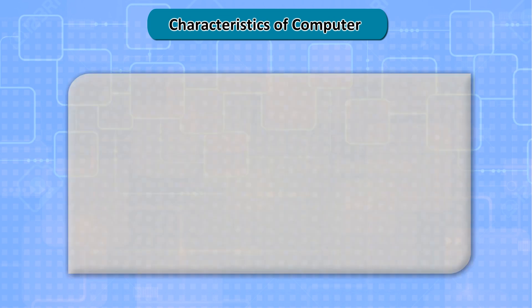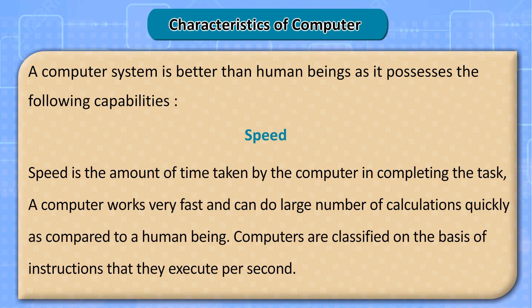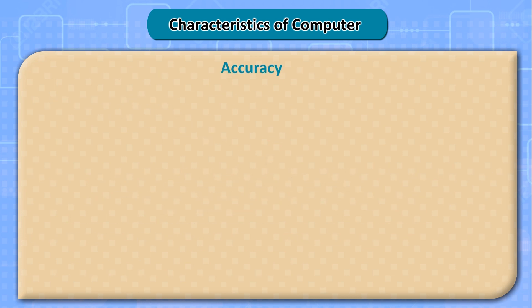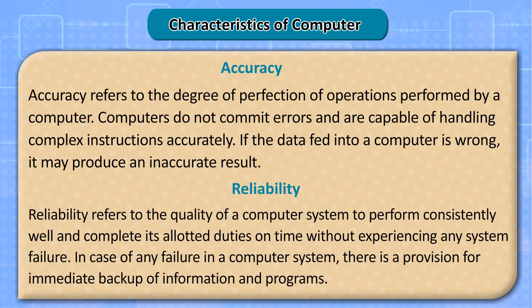Characteristics of Computer. A computer system is better than human beings as it possesses the following capabilities. Speed is the amount of time taken by the computer in completing a task; a computer works very fast and can do a large number of calculations quickly compared to a human being. Accuracy refers to the degree of perfection of operations performed by a computer; computers do not commit errors and are capable of handling complex instructions accurately, though if the data fed in is wrong it may produce an inaccurate result. Reliability refers to the quality of a computer system to perform consistently well and complete its allotted duties on time without system failure; in case of any failure, there is provision for immediate backup of information and programs.